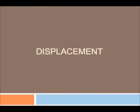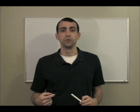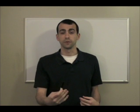Let's talk about displacement. Displacement is basically how far an object has moved from its original location. For example, if my original location is by the whiteboard and I walk across the room to a wall ten feet away, I would have a displacement of ten feet. That's all displacement is — how far an object has moved from its original location.